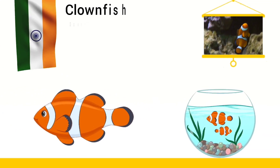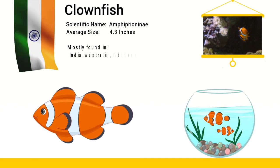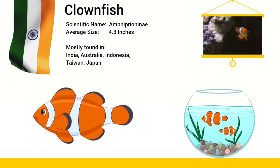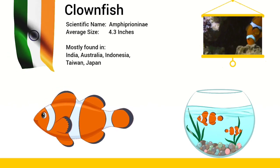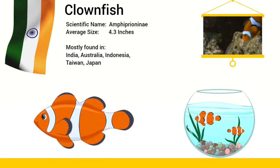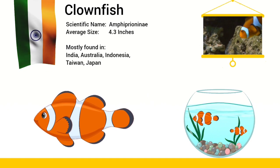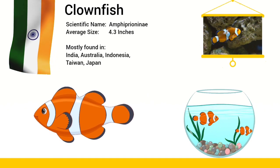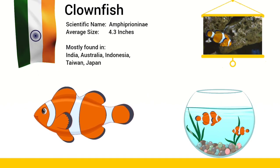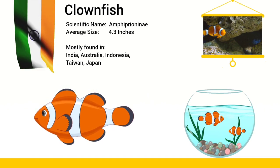There are at least 30 species of clownfish, most of which live in the shallow waters of the Indian Ocean, the Red Sea and the Western Pacific.